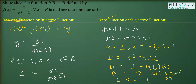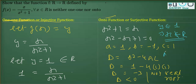Since there are no real roots, y = 1 (a real number) does not give x as a real number. Therefore, the range is not equal to the codomain, and the function is not onto. Hence, we have proved that f(x) = x/(x²+1) is neither one-one nor onto.